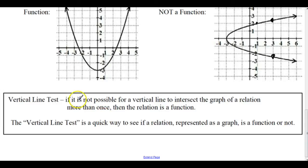Vertical line test. If it is not possible for a vertical line to intersect the graph of a relation more than once, there is nowhere on this graph that I can draw a vertical line that's going to cut the graph more than once. There are many points. Now, I can draw a vertical line here, but that's not the point. The point is, can I draw a vertical line that cuts the function more than once?